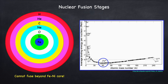So far in this chapter we've found that through various nuclear fusion stages, hydrogen in stellar cores is eventually fused into iron, as well as everything in between. Once you get to iron, stars cannot fuse beyond that. That's because iron and nuclei around iron have the lowest binding energy per nucleon of any nuclei.